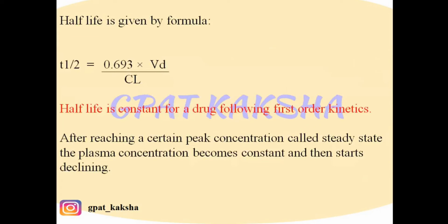Half-life is given by the formula: half-life = 0.693 × Vd / Cl, where Vd is volume of distribution and Cl is clearance. Half-life is constant for a drug following first-order kinetics.